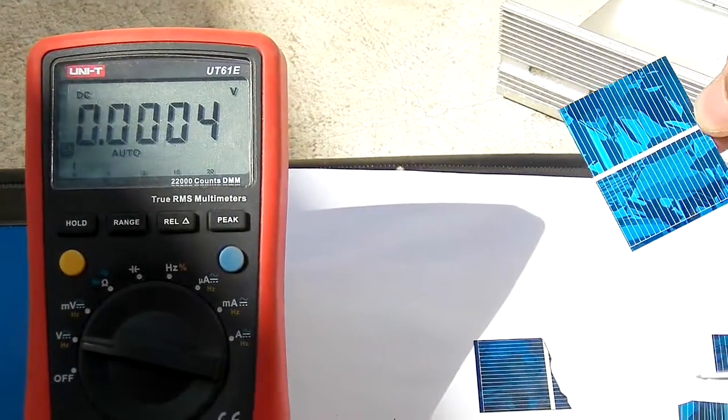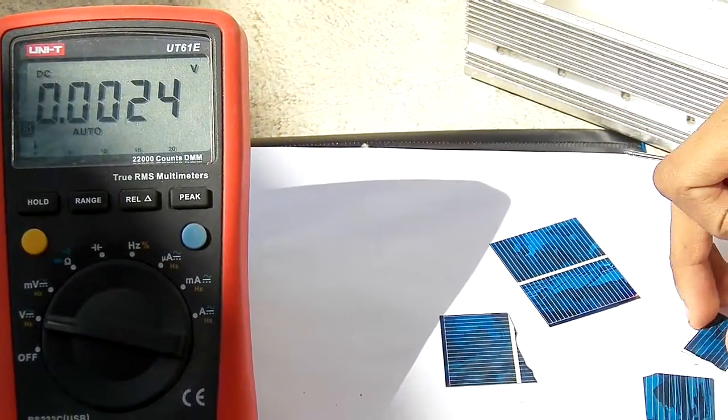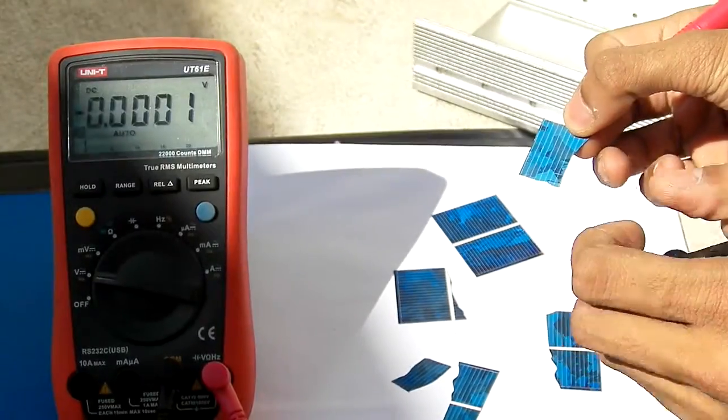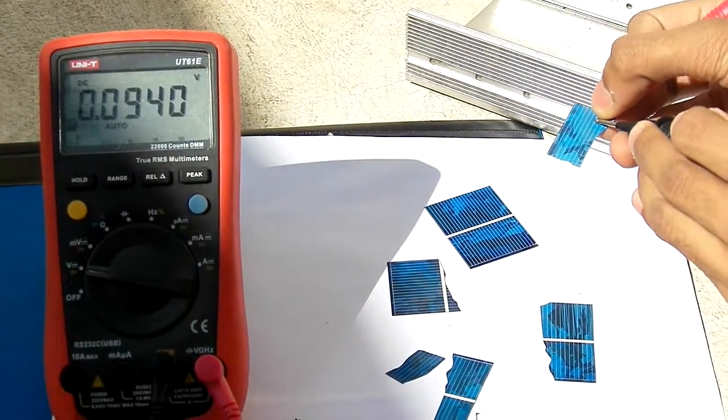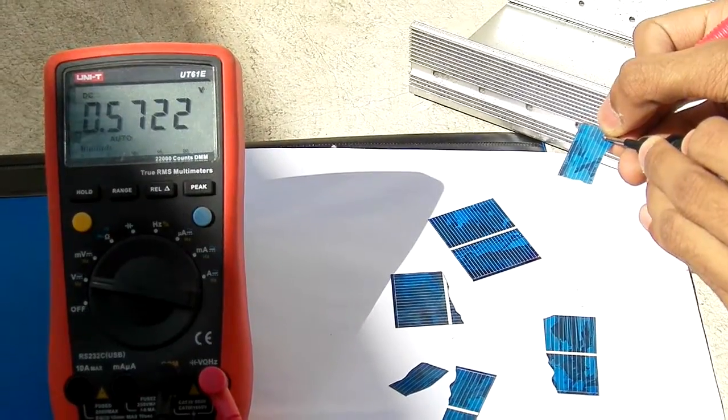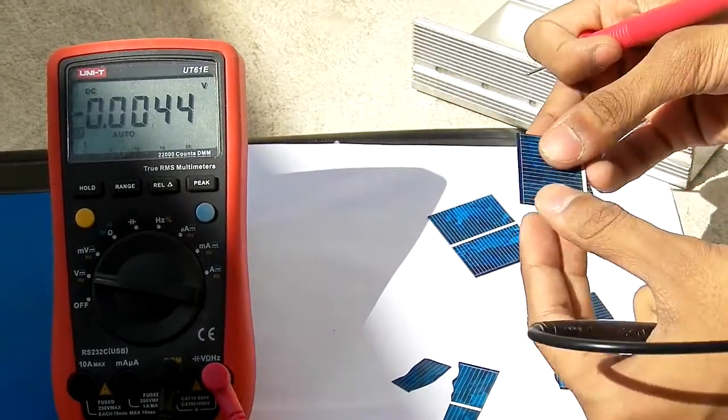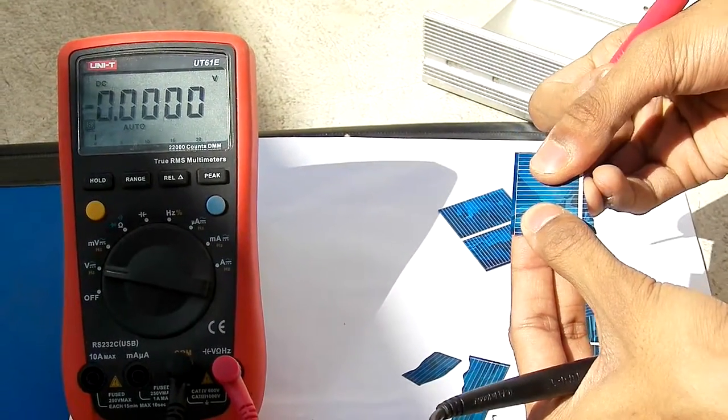The interesting fact about this panel is that no matter how small you break these panels, it will be the same voltage. As you can see here, it is 0.5 volts. It doesn't matter.